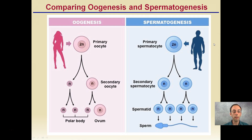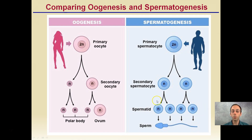Providing a direct comparison: in oogenesis, we start with that diploid cell and ultimately produce only one viable ovum. The small polar bodies, while haploid, are not really functional. In spermatogenesis, starting from one diploid cell, we produce four viable sperm. So it's important to remember that for every diploid cell in spermatogenesis we get four viable sperm, whereas in oogenesis we produce only one viable ovum.